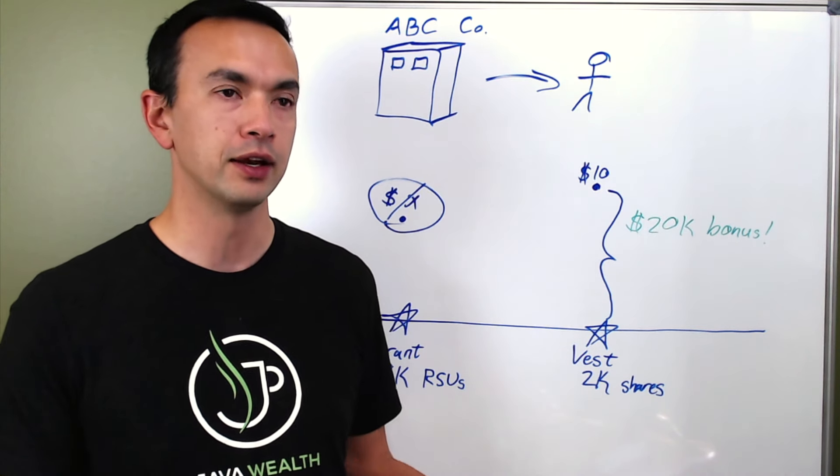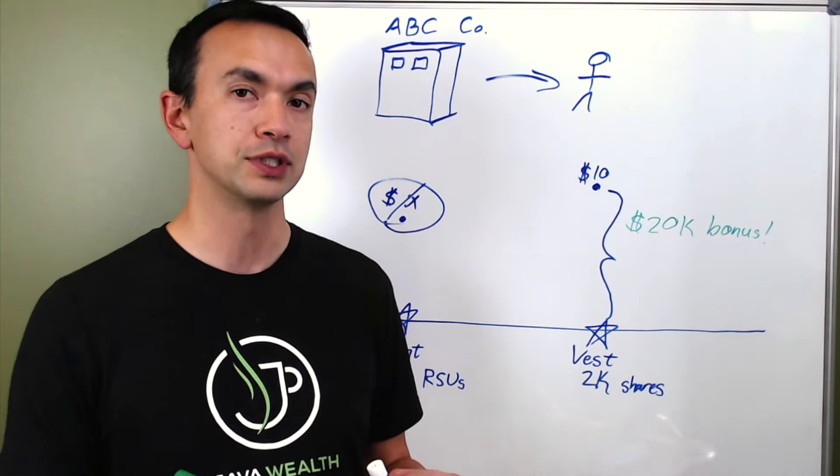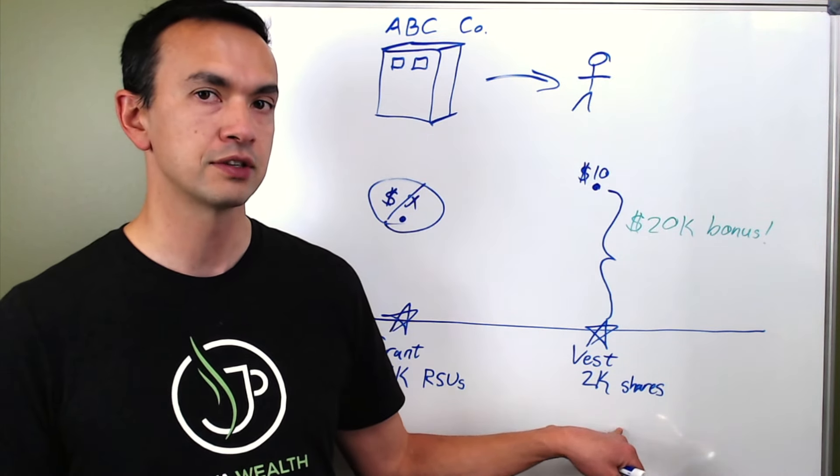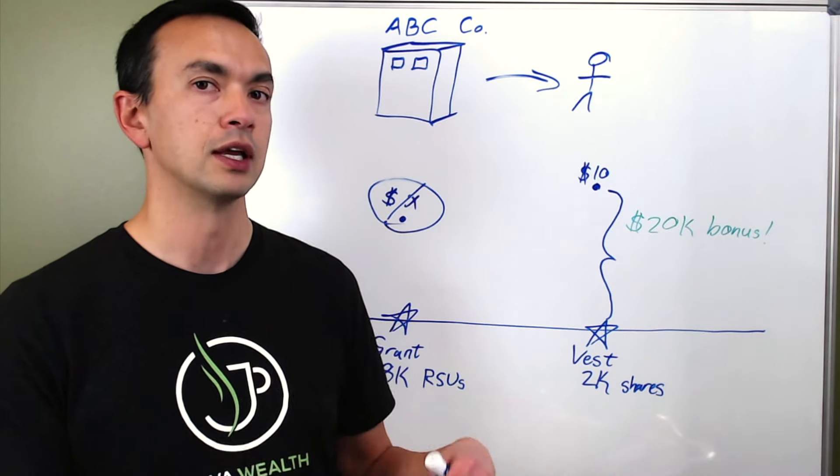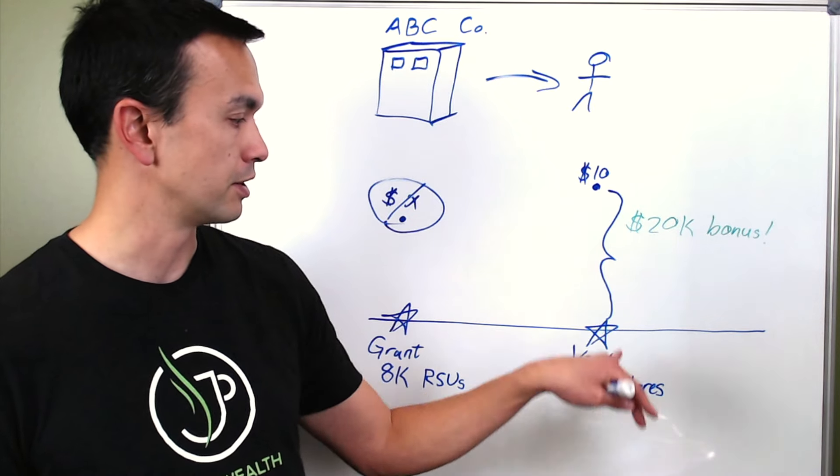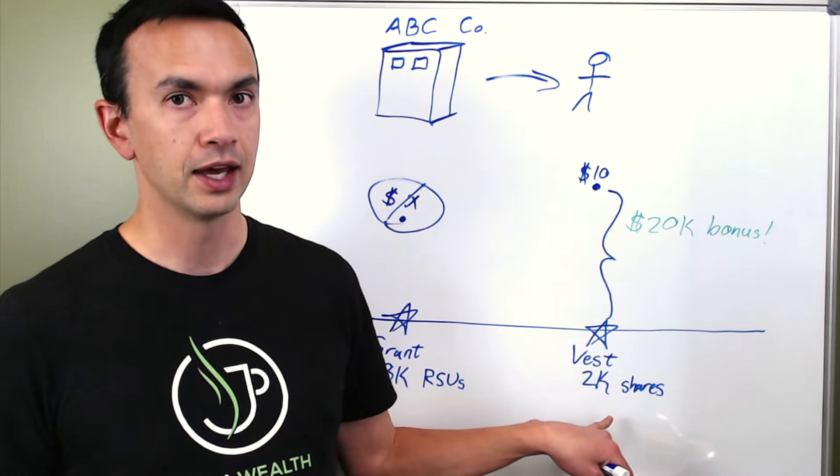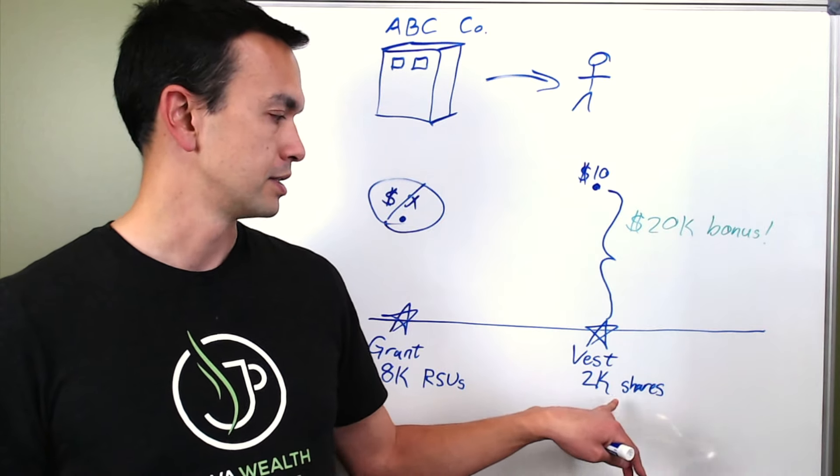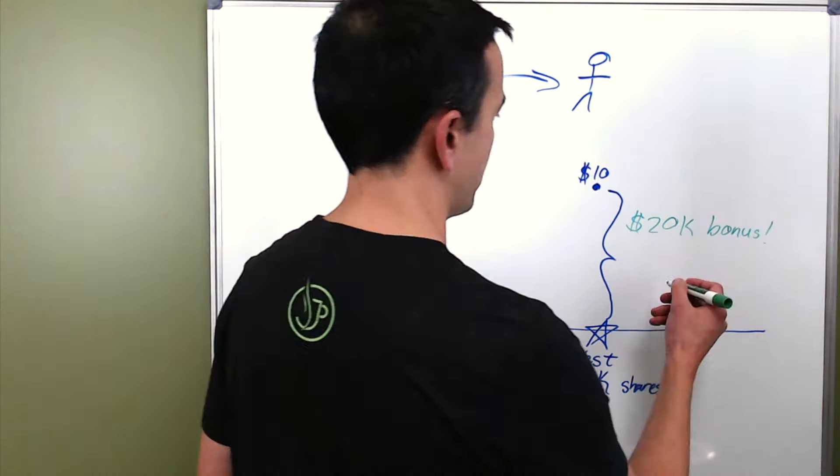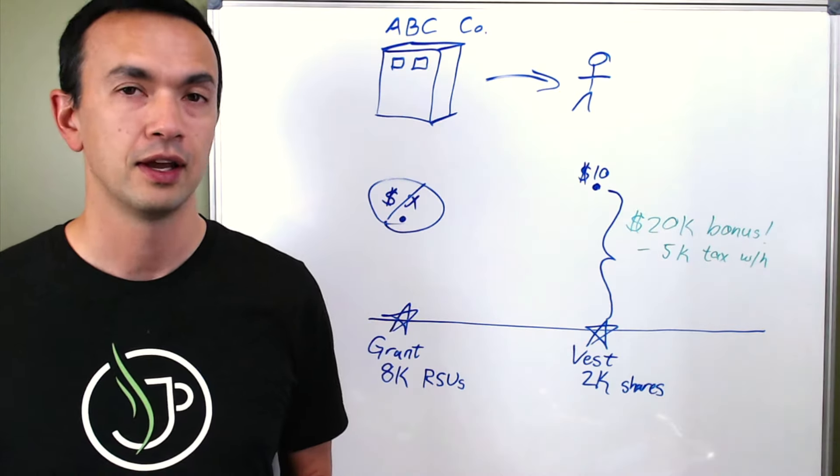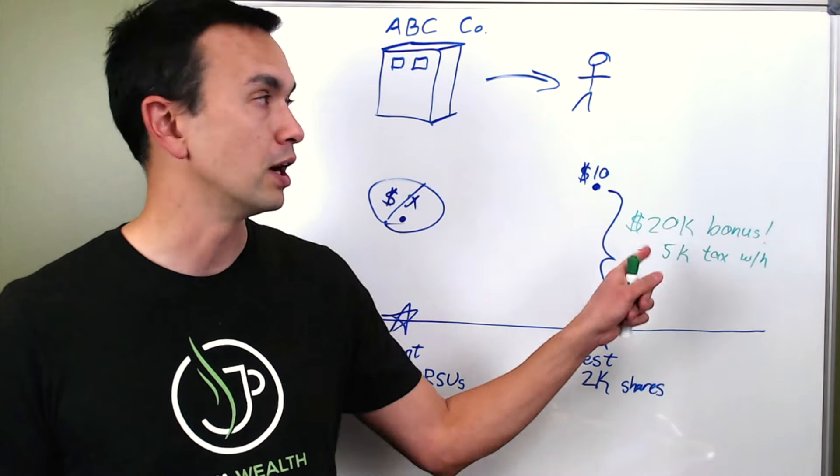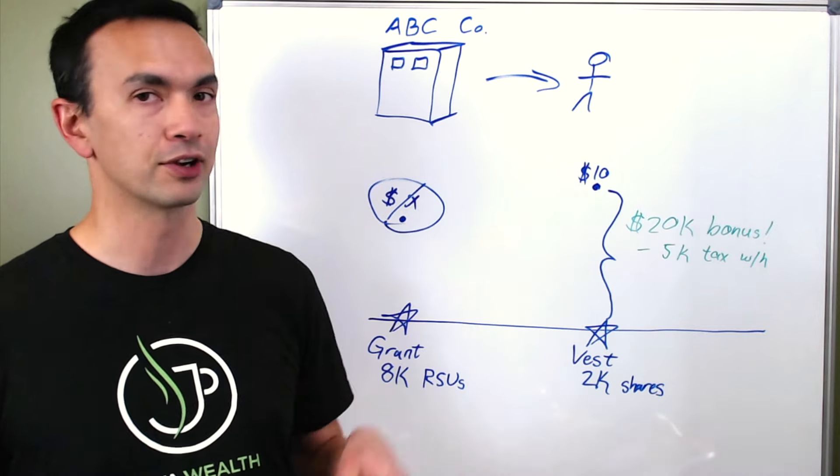A very common way that the company will withhold those taxes for you is that they'll take a portion of these shares and they'll surrender them and sell them in order to withhold the taxes from them. So for example, in our scenario, if there are 2,000 shares that vested, then say they would withhold 500 of those shares to pay for the taxes. And then the end result of all of that is that you now become the proud owner of 1,500 shares of stock in your company.